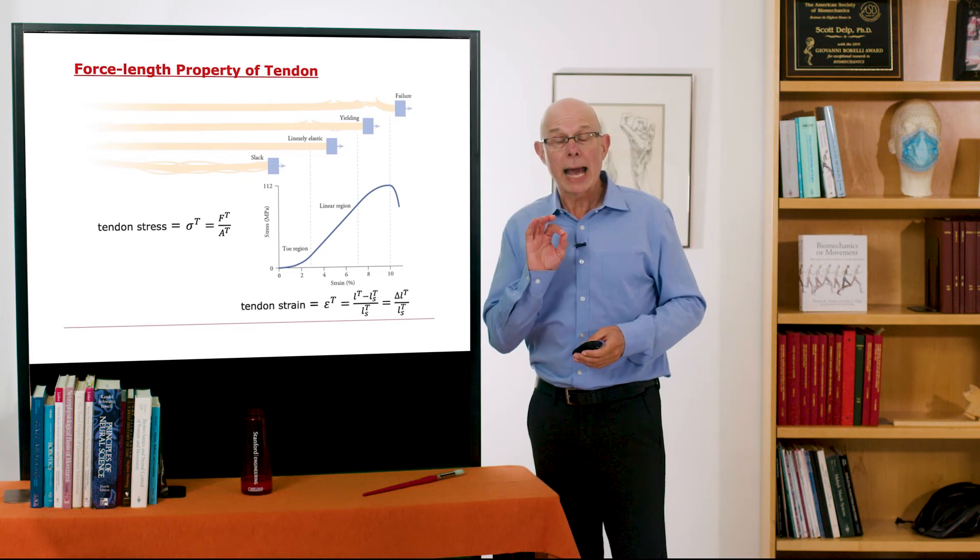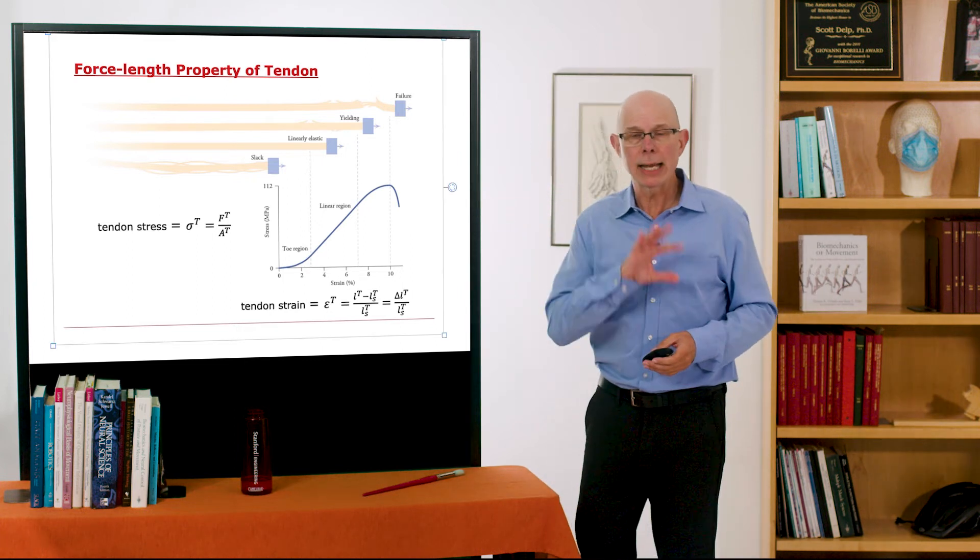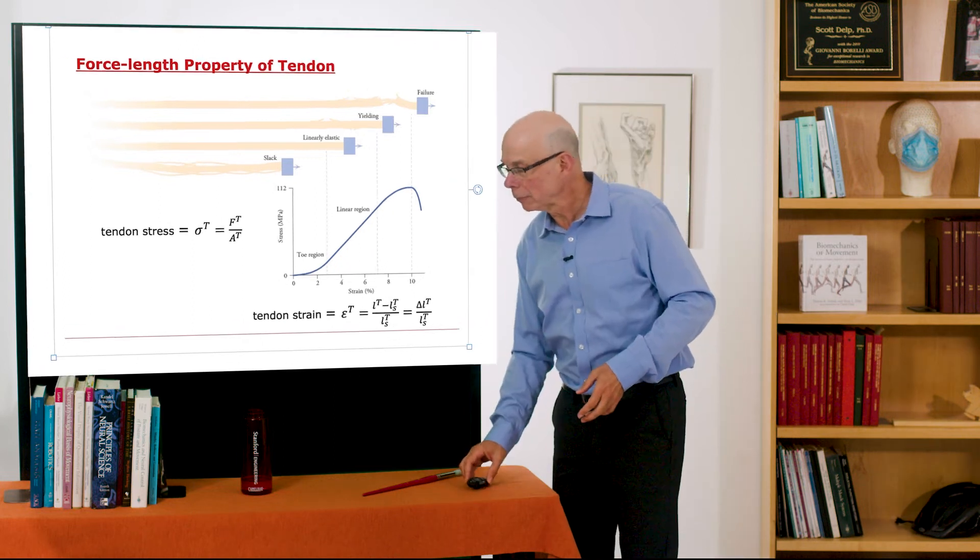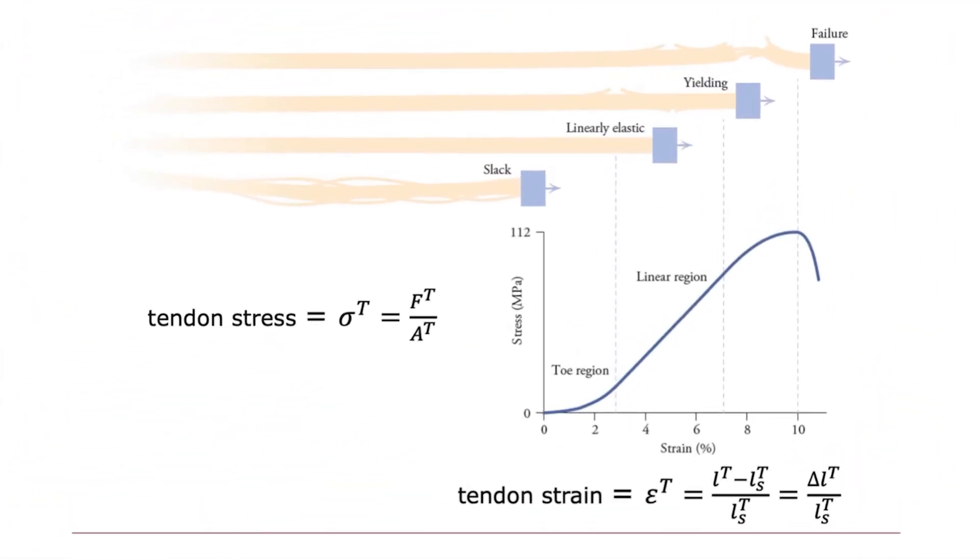Finally, static properties of tendon. Tendon acts like a spring, and what I'm drawing here is the tendon stress versus strain curve. However, we see a toe region here where it's nonlinear, then there's a linear region, and then above a certain strain, the tendon begins to break.